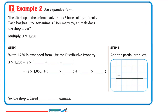Let's do another one. Example two: the gift shop at the animal park ordered three boxes of toy animals. Each box has 1,250 toy animals. How many toy animals does the shop order? Since each box means multiplication, instead of adding 1,250 three times, we multiply 3 by 1,250. We write 3 times, open two parentheses, and inside write the expanded form of 1,250.